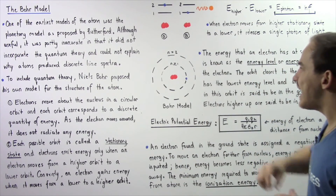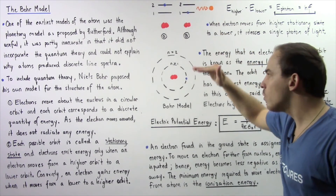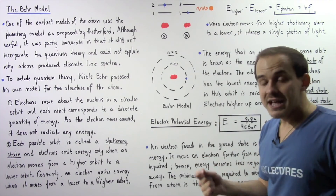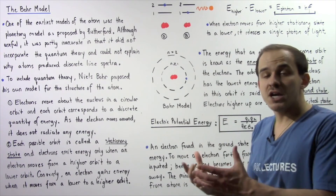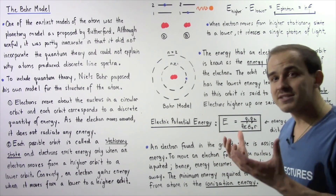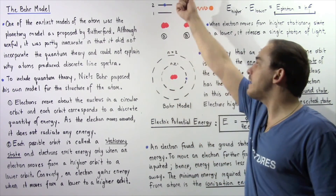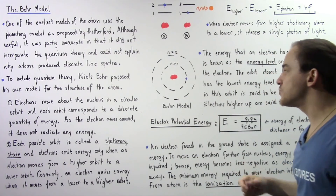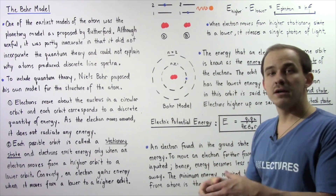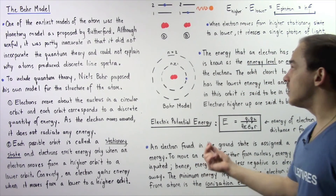As an electron moves from a higher orbital to a lower orbital, it decreases in energy — the energy becomes more negative — and the electron is more stable. When you move the electron farther away from the nucleus, you must input energy, the energy becomes more positive or less negative, and the electron becomes less stable.